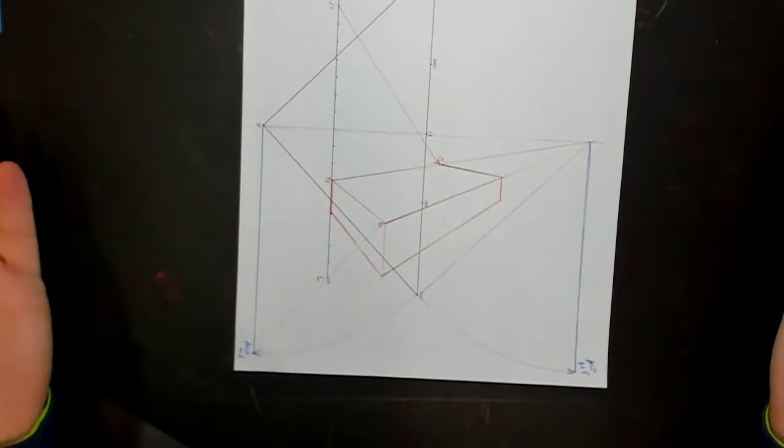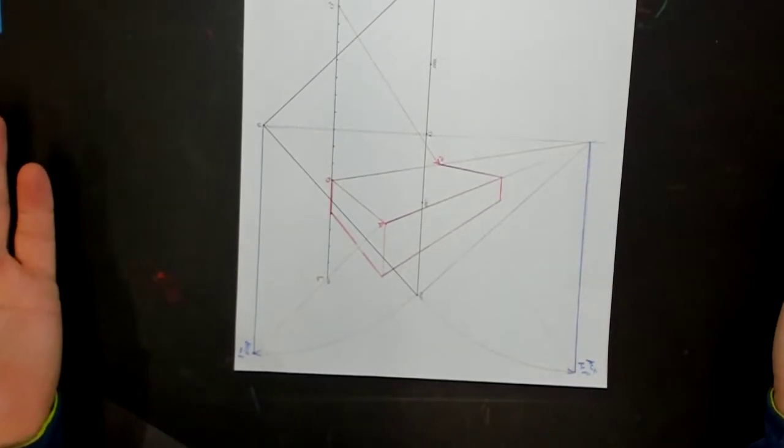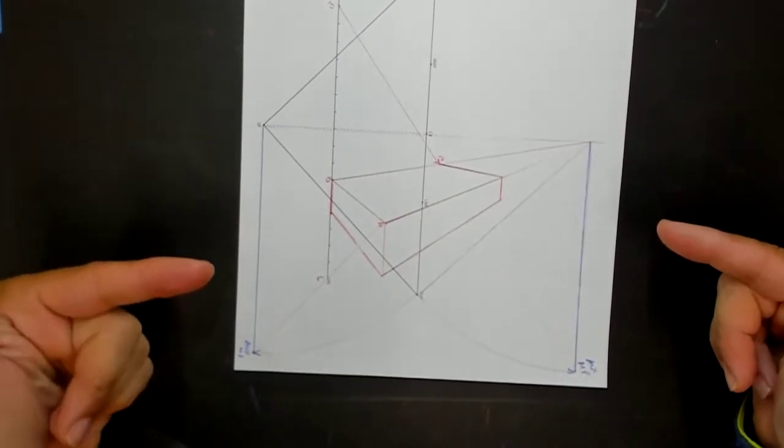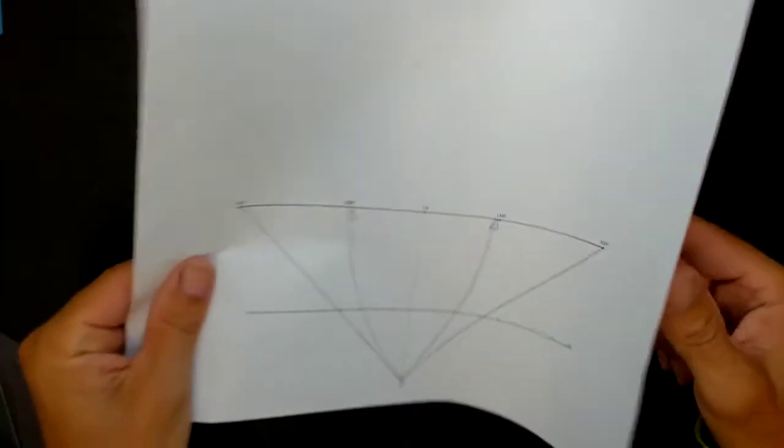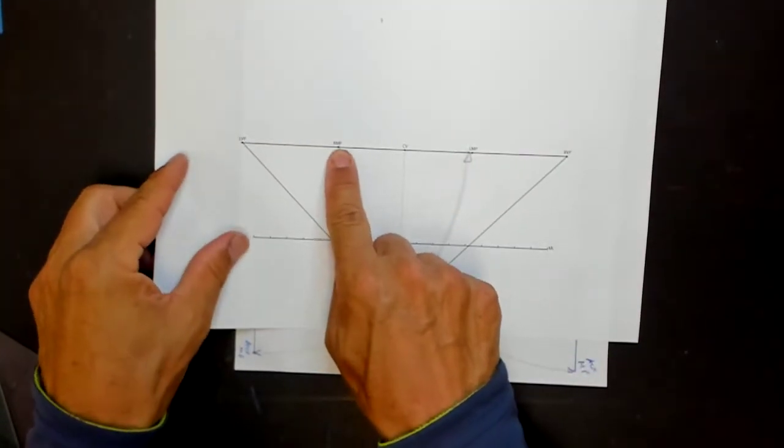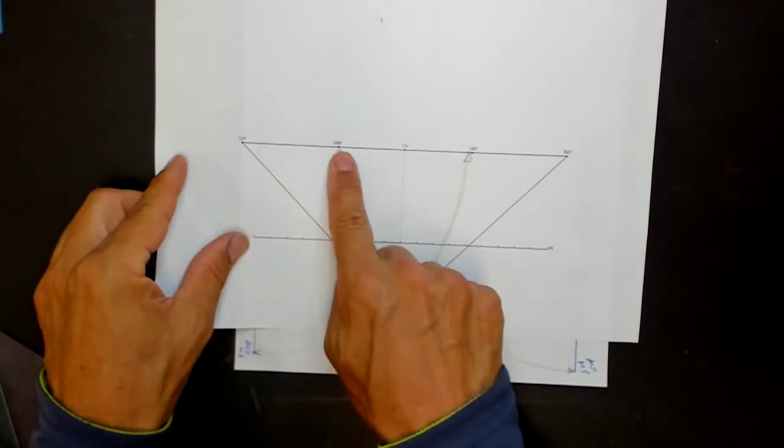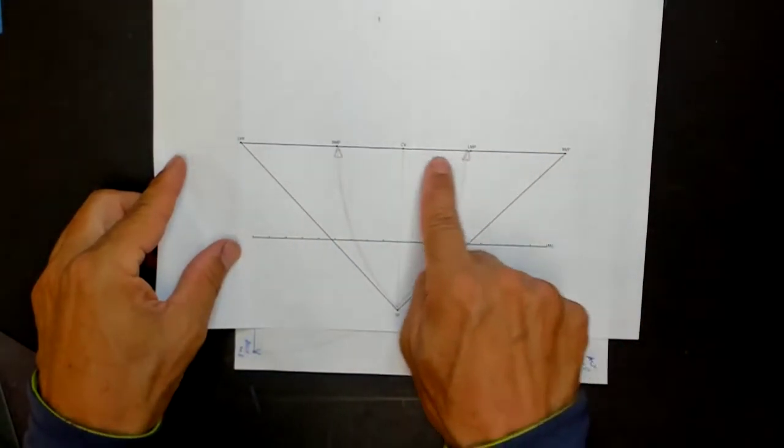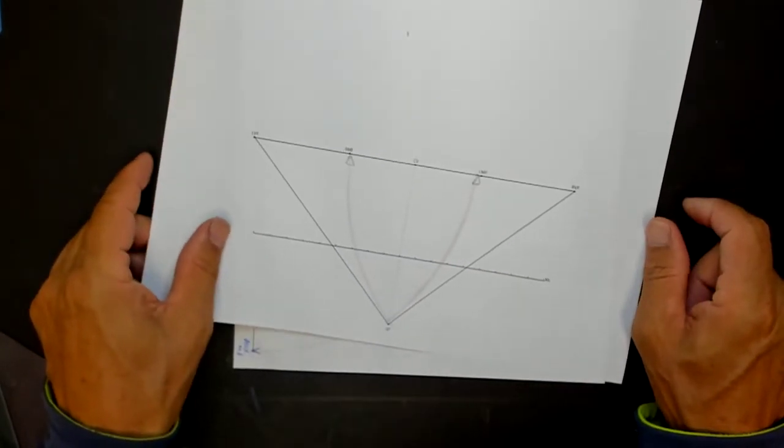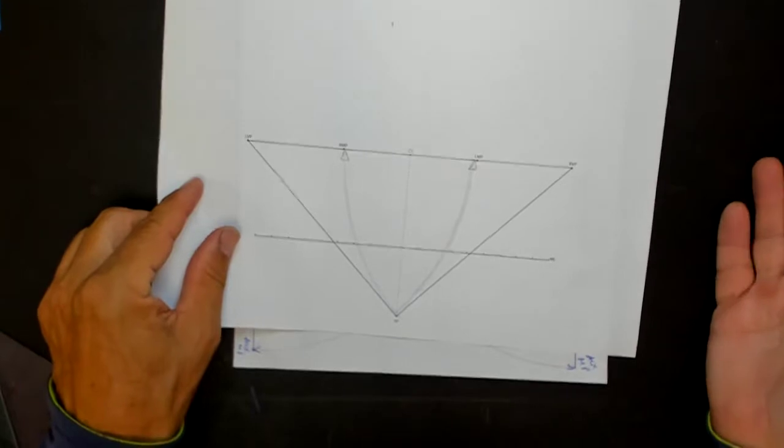The only real difference here between two-point perspective and this diagram is that in two-point perspective we were doing this for measuring points. We're putting them on the horizon line so that the vanishing points and the measuring points were all along the same line. That needs to happen.